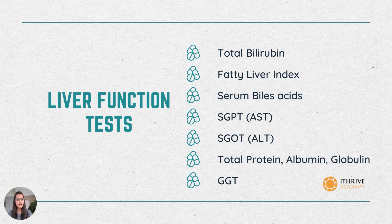Albumin helps in keeping blood from leaking out of the blood vessels, and globulins are what fight infection. Both are also made in the liver.